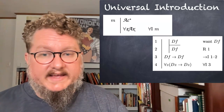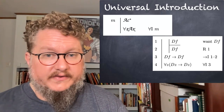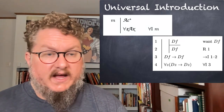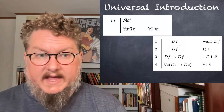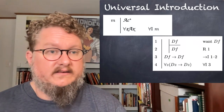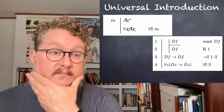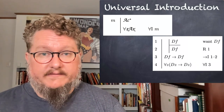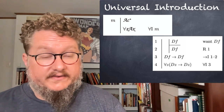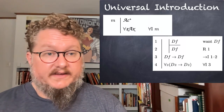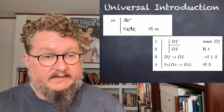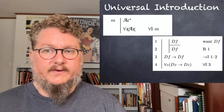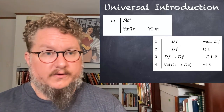The reason I can use the universal introduction rule in this way is because I could have picked any constant whatsoever — A, B, C, D, E, F, etc. It doesn't matter. It is arbitrary. If it's arbitrary, then the same form of sentence 3 should apply to anything whatsoever, because I didn't pick out anything specific. I don't have any conditions that are holding me to F.